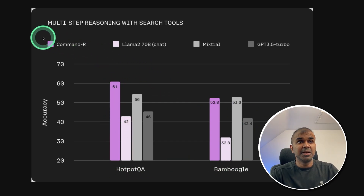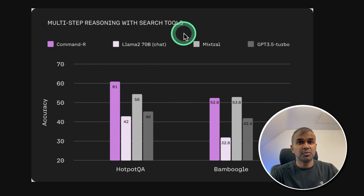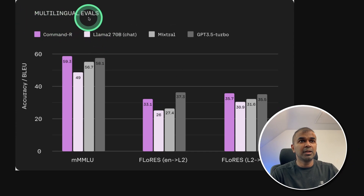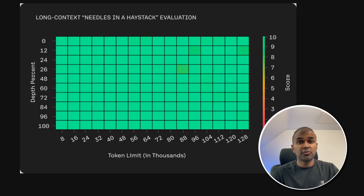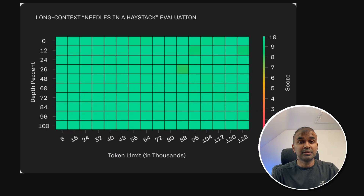This is a multi-step reasoning with search tools. For multilingual evaluation, you can see Command R performing much better. For the needle-in-the-haystack test with a 120,000 context window, you can see the performance results here.